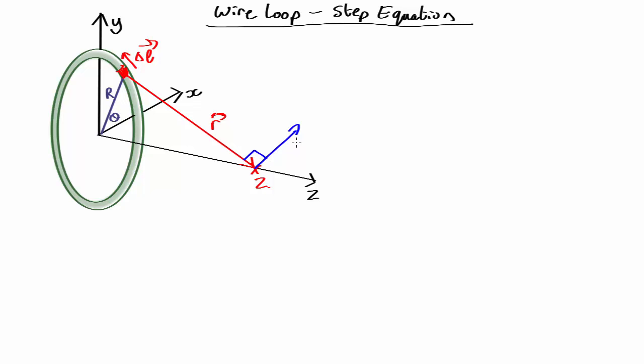So it's going to be the delta B caused by this little delta L of the loop over there, and then we're going to add that up as we go all the way around the circle. Okay, so how can we calculate that?